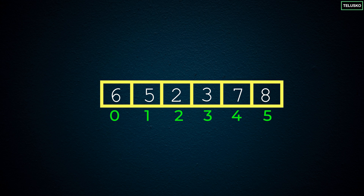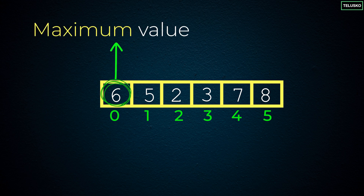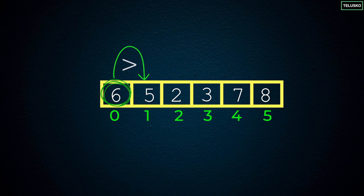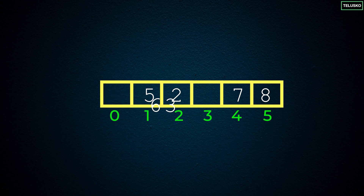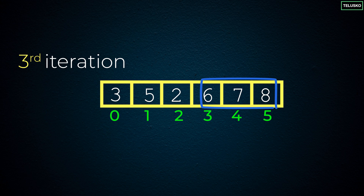We repeat the process again. Start with six, assume it's the biggest. Compare with five — still biggest. Compare with two — still biggest. Compare with three — still biggest. Once we complete the unsorted section's iteration, we move six to where three was — they swap. Now the last three values, six, seven, and eight, are sorted. We always maintain two sections: sorted values at the end and unsorted values at the front.